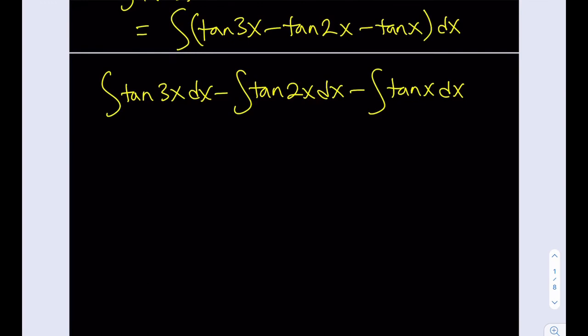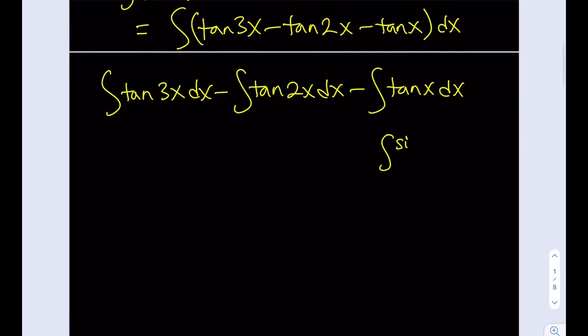You can do different things, but the most common approach here would be writing it as sine over cosine and then using u-substitution. If you say that u equals cosine x,